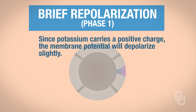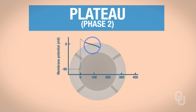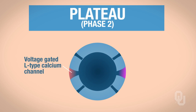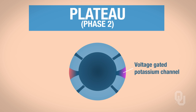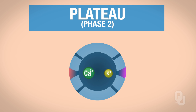The next phase is the plateau. We now have a new set of channels called voltage-gated L-type calcium channels — the same L-type channels as in the pacemaker. Through these L-type calcium channels, we have calcium influx. During this period, positive charges are coming into the cell via calcium, but positive charges are also going out via voltage-gated potassium channels. Because we have positives going in and positives going out, that creates this plateau.